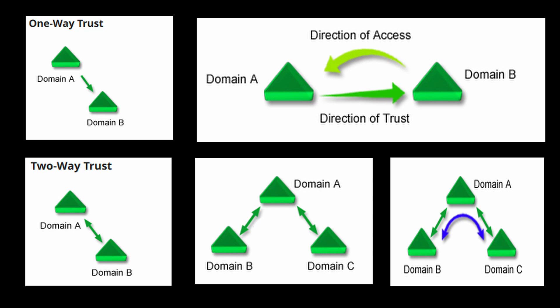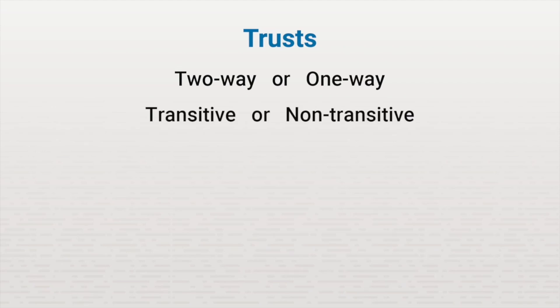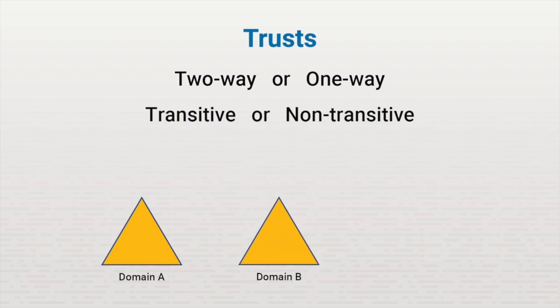Let's look at some concepts with trusts that will be helpful for you to understand. First, understand that trusts can be directionally two-way or one-way, and they can be either transitive or non-transitive. A two-way trust means that both domains trust each other. Authentication requests can go from either domain in the trust to the other domain. Users in either domain can access resources in the other domain.